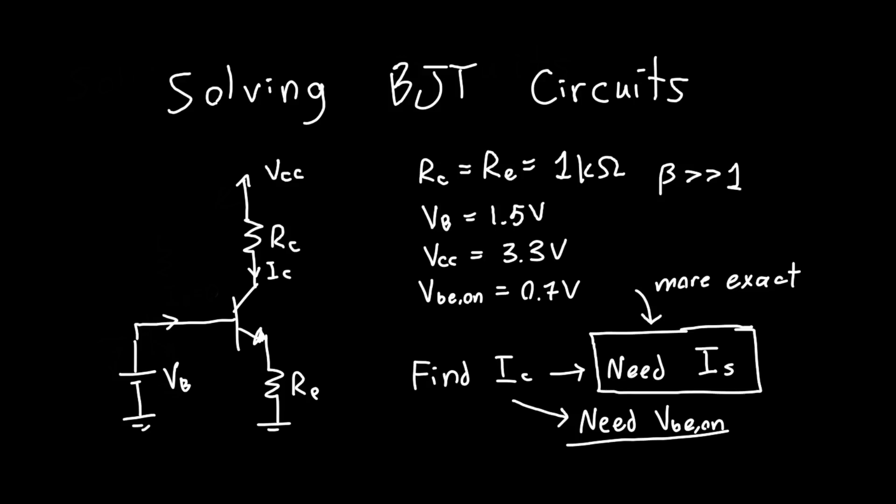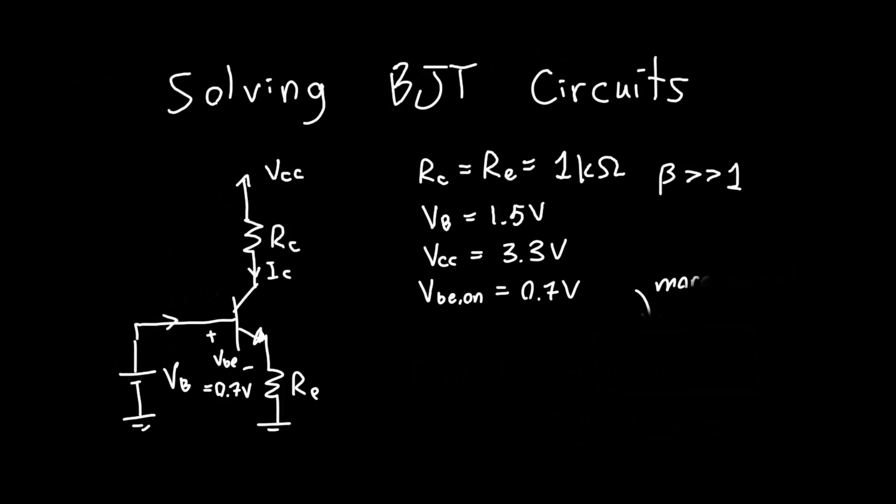So how do we actually go about solving this? This voltage here is VBE, so we just assume that this is equal to 0.7 volts. Since VB is equal to 1.5 volts, then we know that the voltage here is just the voltage here minus VBE. So this is 1.5 volts minus 0.7 volts, which is 0.8 volts.